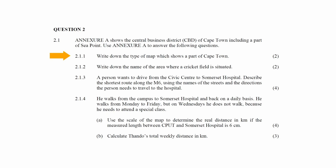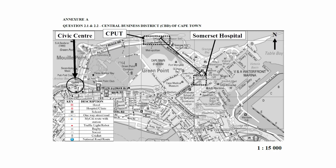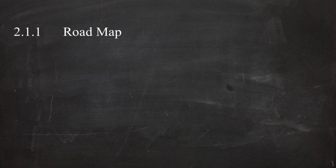In Question 2.1.1 you have to write down the type of map that shows a part of Cape Town. The type of map displayed in Annexure A is known as a street or road map.